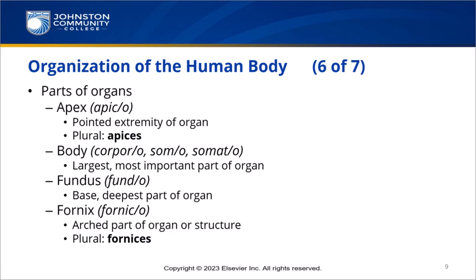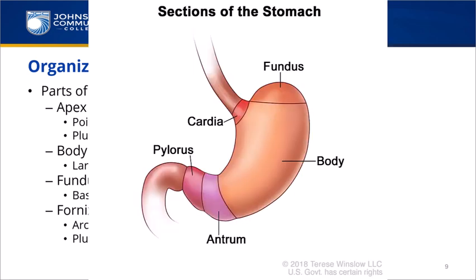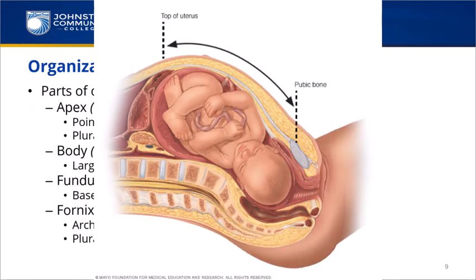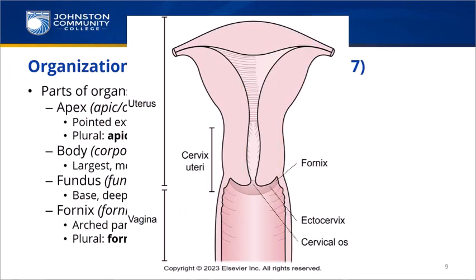Here's an image of a stomach where you can see the body and the fundus. The fundus is the base or deepest part of an organ. Uterine fundal height is an important measurement when determining the age of the fetus — it is measured from the pubic bone to the top of the uterus. And lastly, we have the fornix, which is the arched part of an organ or structure. An example would be the fornices of the vagina — they are the vault-like arches that are the deepest part of the vagina.